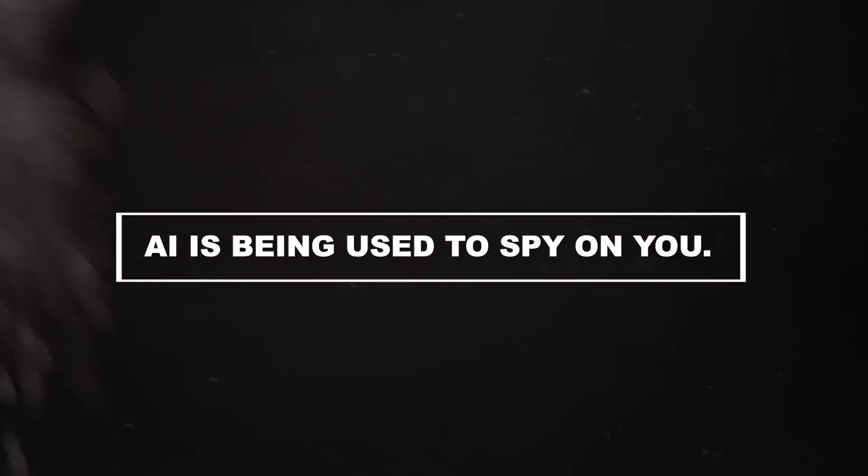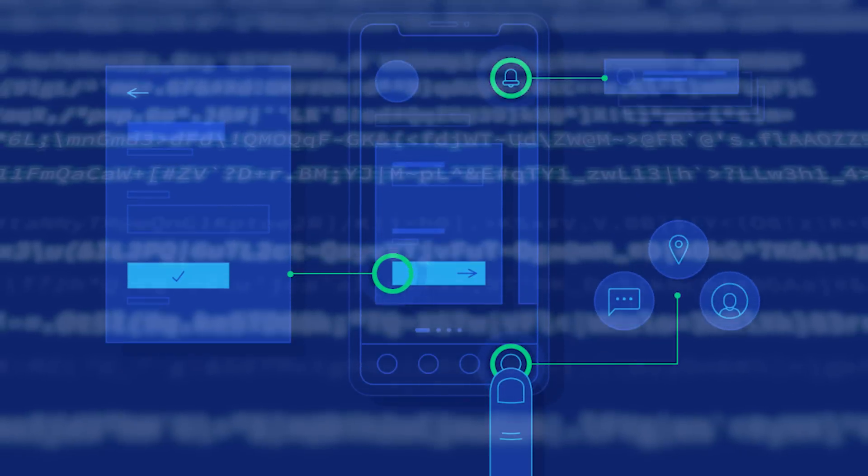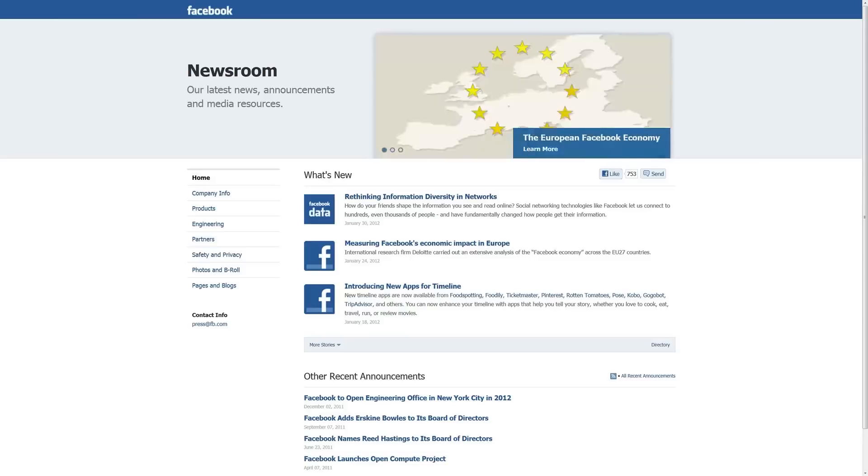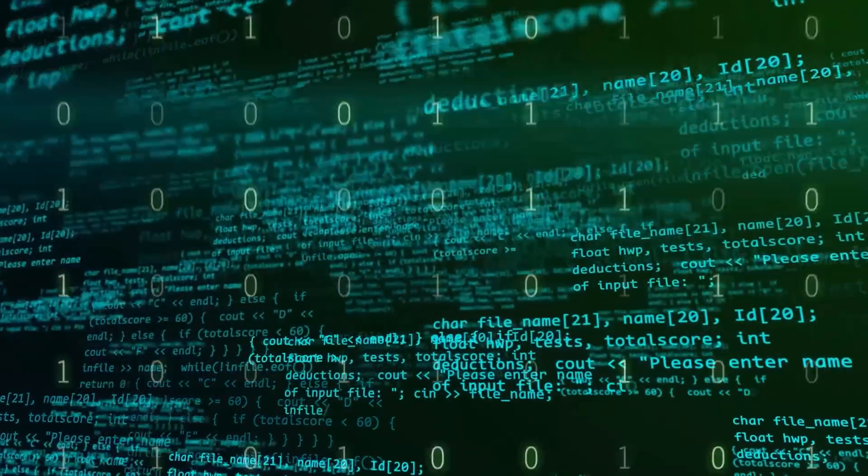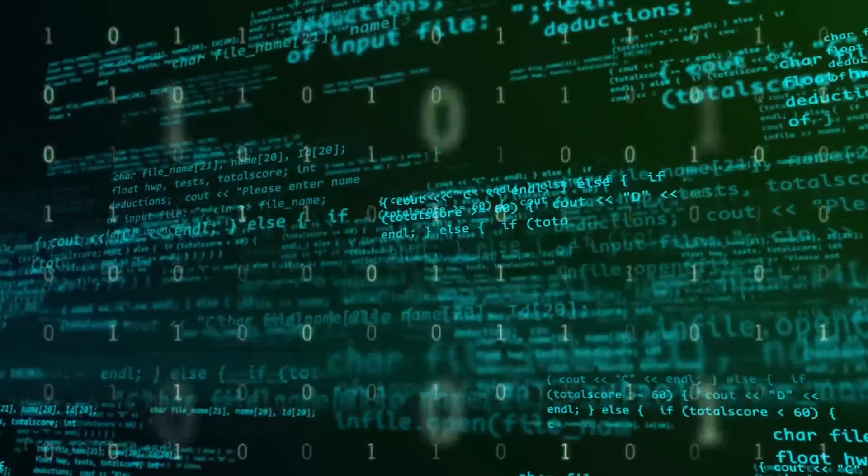Number 3. AI is being used to spy on you. Every click, every search, and every interaction leaves a digital breadcrumb, building a detailed profile of who you are and what you like, and even predicting what you'll do next. It's like having an invisible stalker, but it's not a person. It's an algorithm.